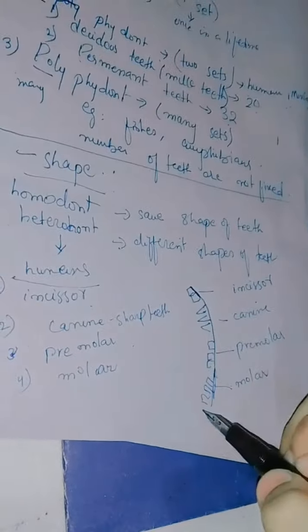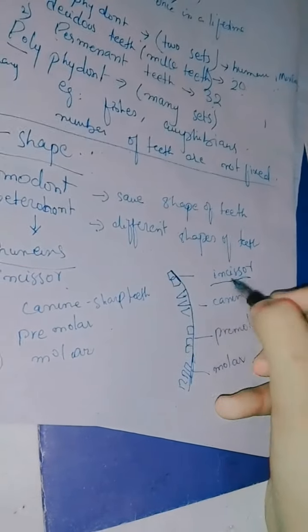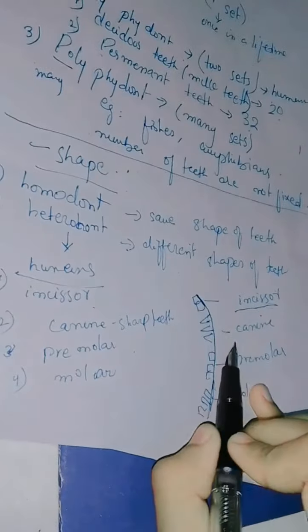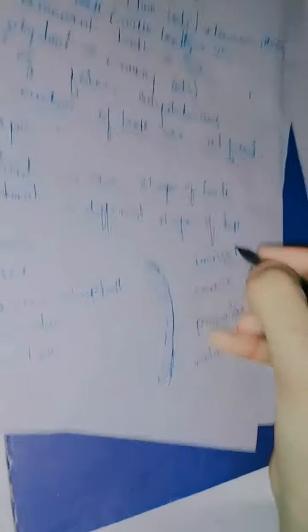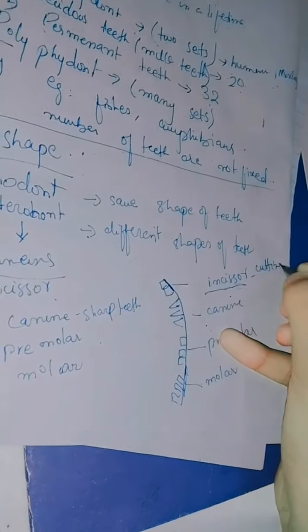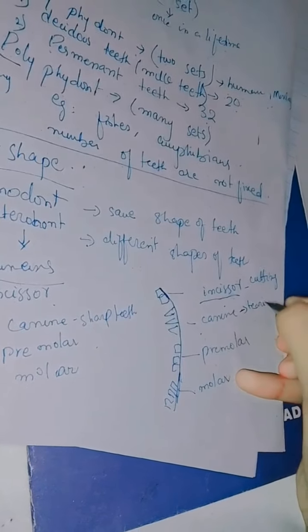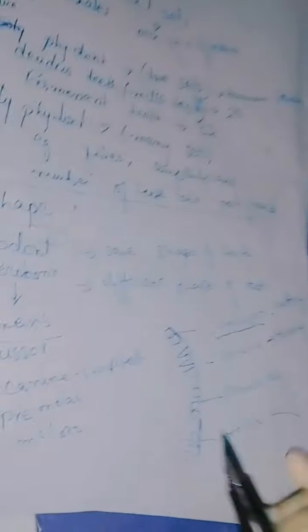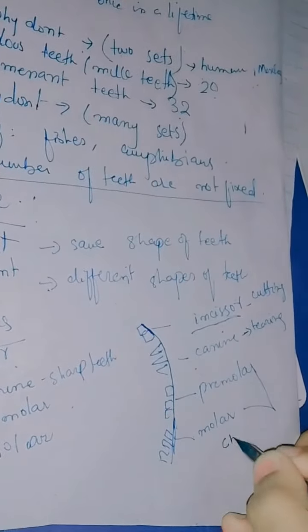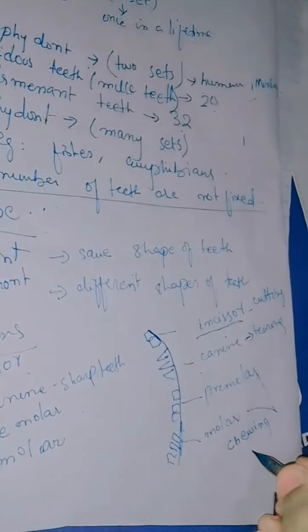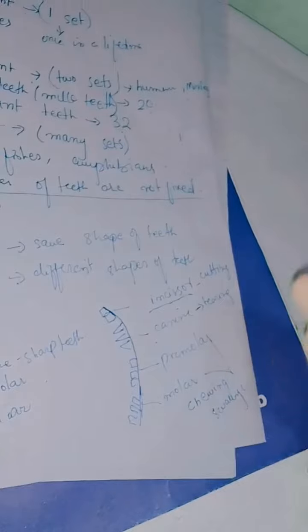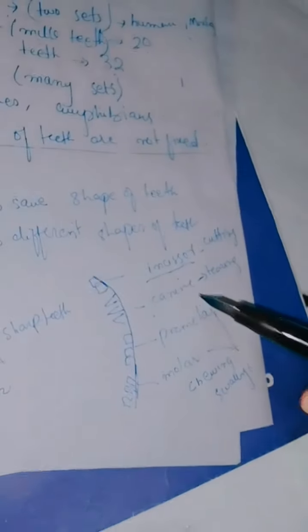Each tooth type has a different function. Incisors are used for cutting, like scissors. Canines are sharp teeth used for tearing. Premolars and molars are present at the posterior — the back side of our mouth — and they are used for chewing as well as swallowing food.